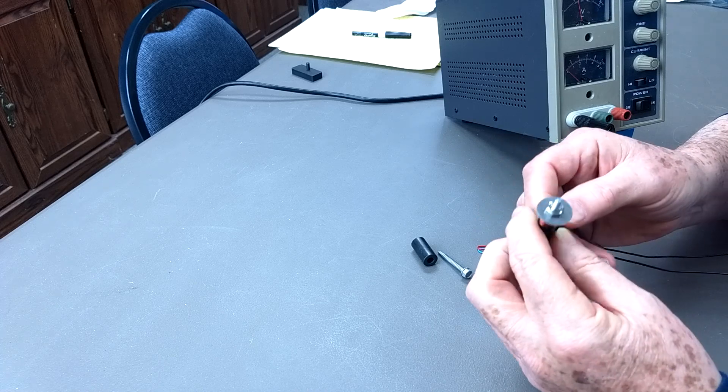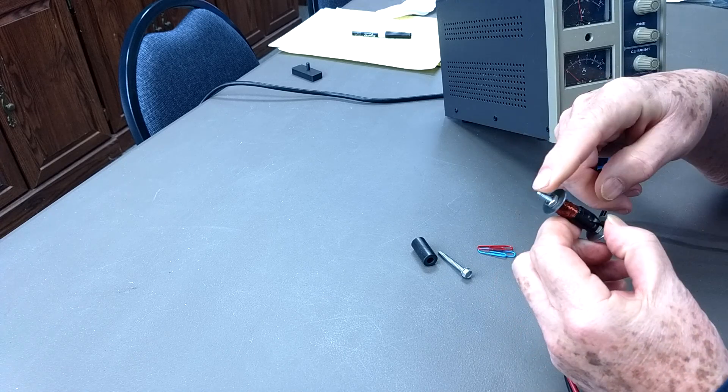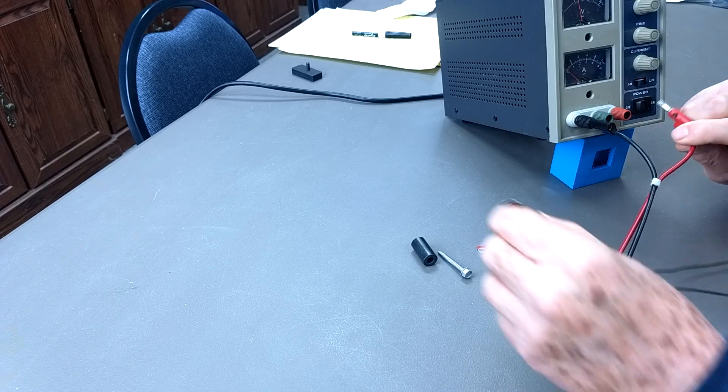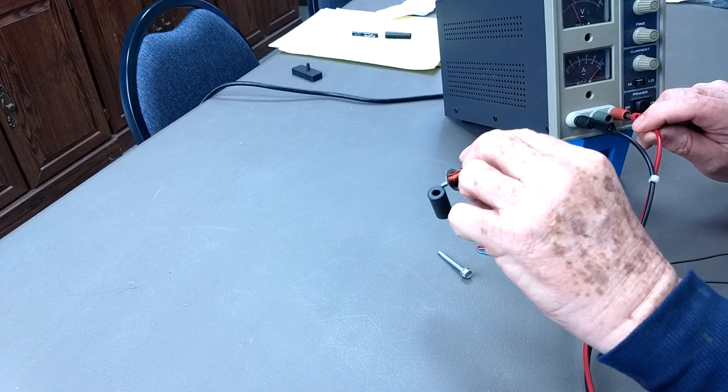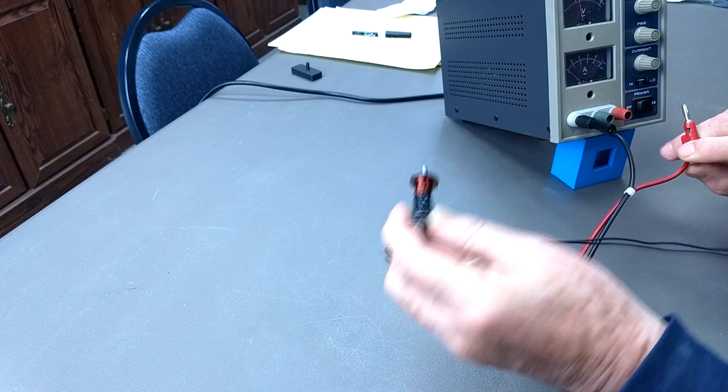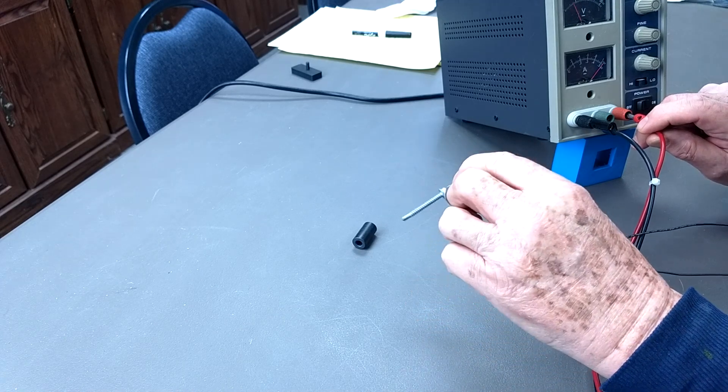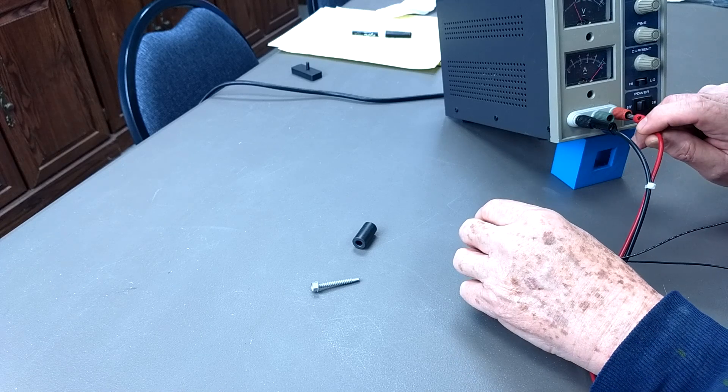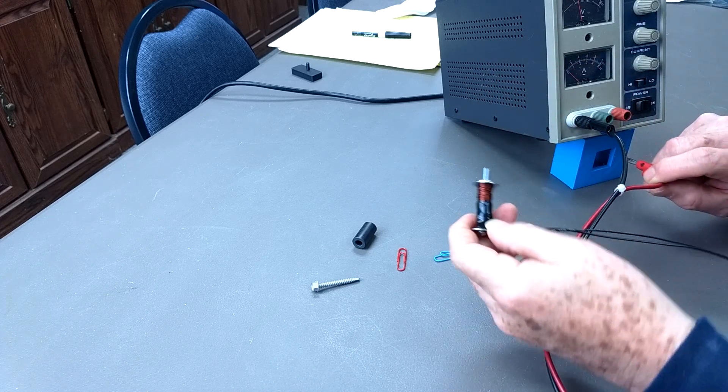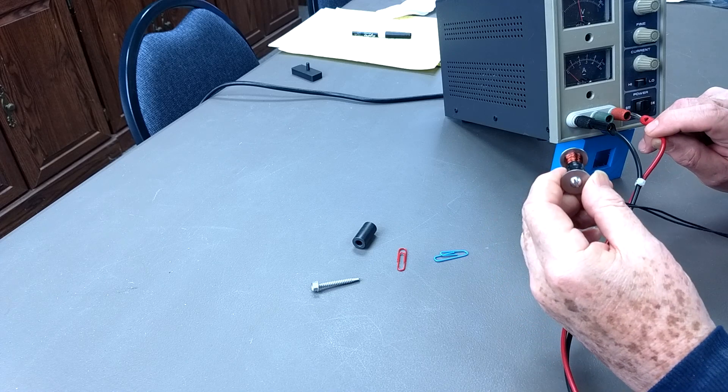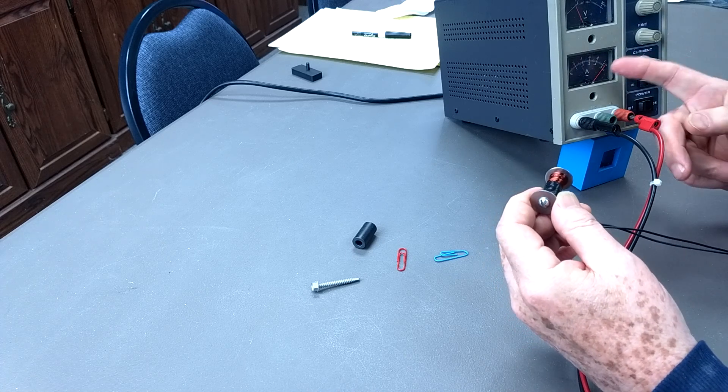Here's an electromagnet, which is many turns of a fairly fine wire, in this case on a number eight machine screw. And when we connect it to our power supply, we can pick things up. And when we disconnect it, it loses its magnetism. That was a ferrite bead. Here's a steel screw. Here's a couple paper clips. So in the case of this, we have a fixed magnetic field, just like the permanent magnet, as long as the power is applied.